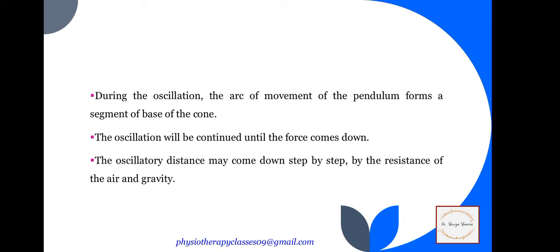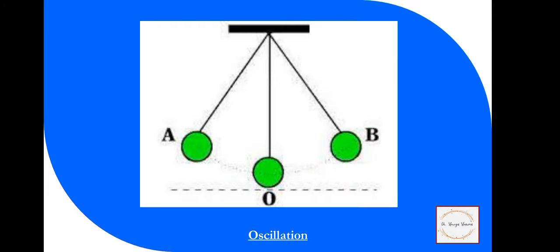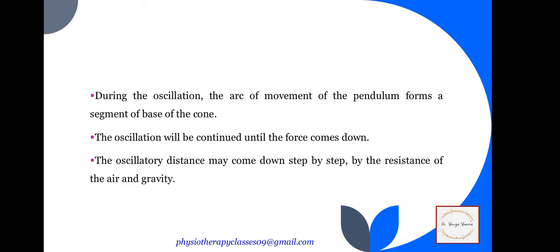During the oscillation, the arc of movement of the pendulum forms a segment of the base of a cone. The oscillation will continue until the force comes down. Like in the park with a jhoul swing — you are taking an oscillation on the swing, but as you don't put force on it, the swing will stop. As you stop putting force, the length of oscillation will decrease, coming down step by step due to the resistance of air and gravity.